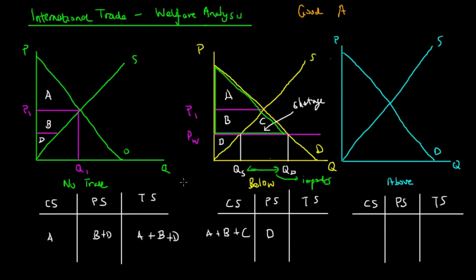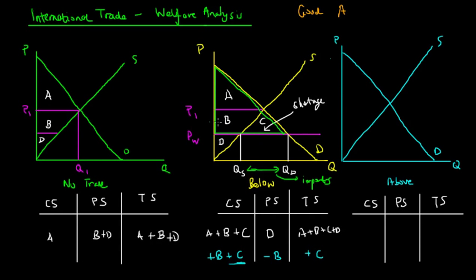As we can see, in society producers are worse off by negative B, and consumers are better off by plus B and plus C. The overall change to total surplus is A plus B plus C plus D, and therefore society gains this area C. As a result, society is better off given the presence of international trade.